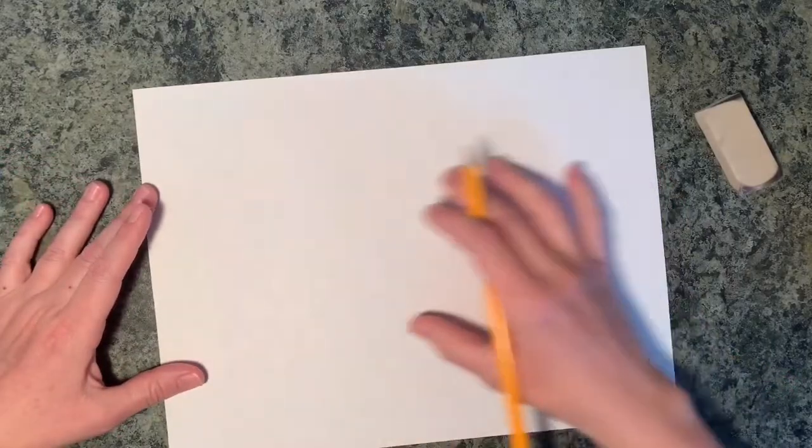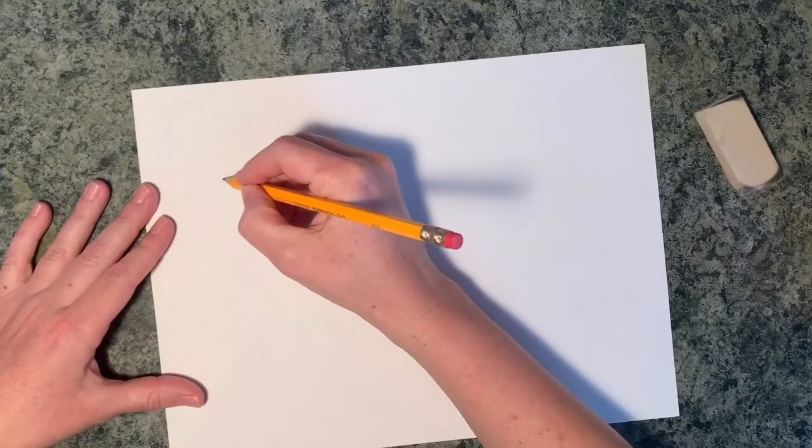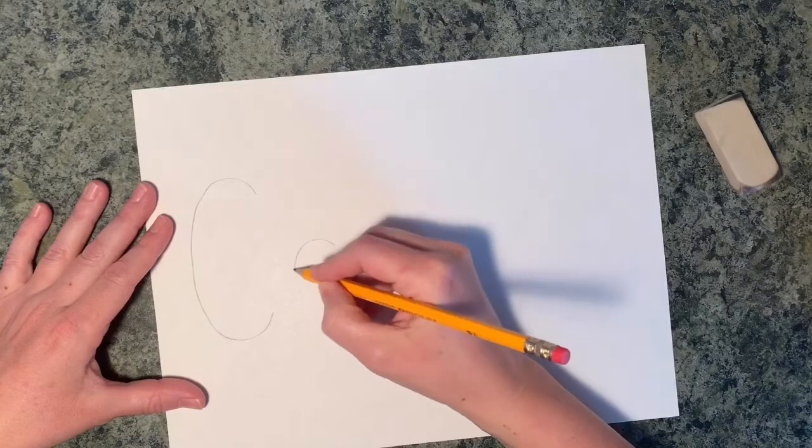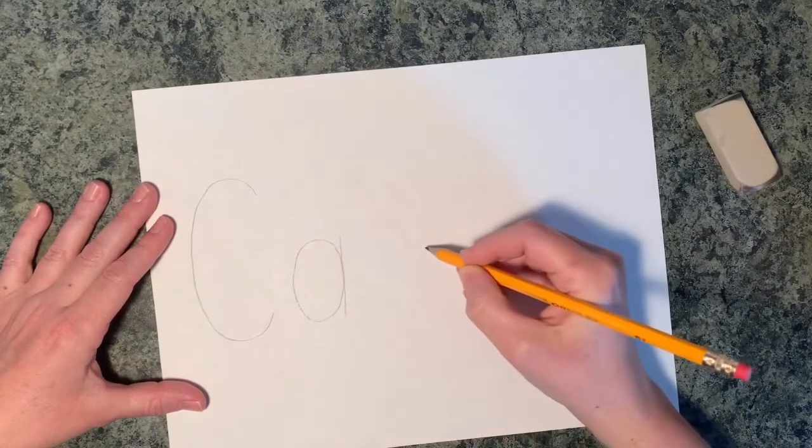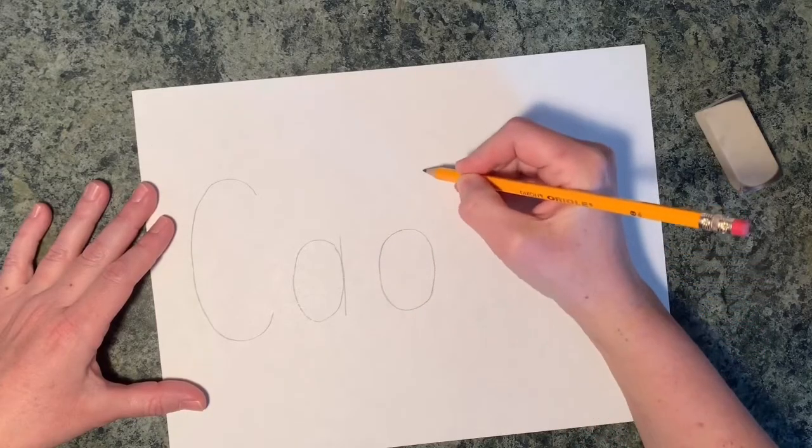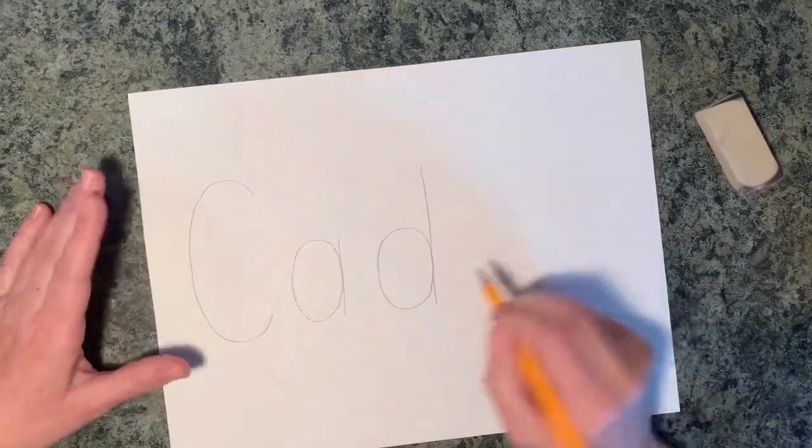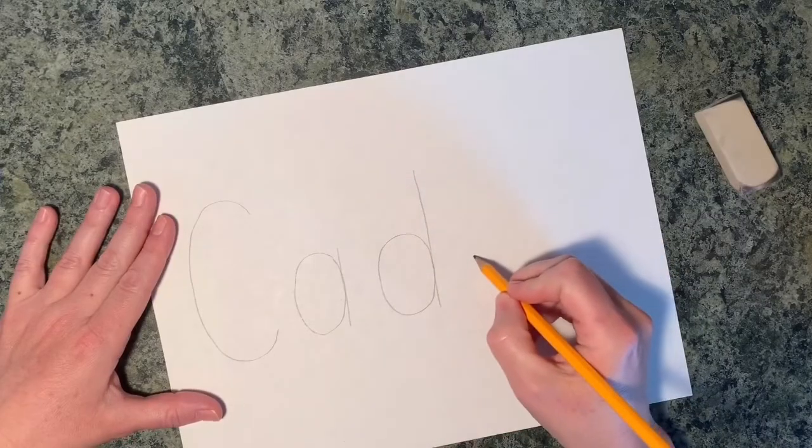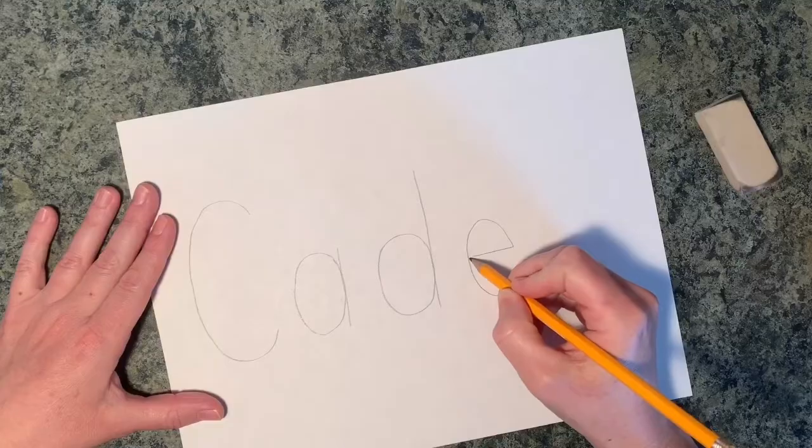So the first thing you need to do is find the middle of your paper and you're going to write your name really big and keep your letters pretty far apart. And nice and neat is going to get you a very good result. So keep it clean. You can do all caps if you want. You can do all lowercase or you could do what I'm doing here, which is the capital at the beginning and the lowercase at the end. It's completely up to you on this one.